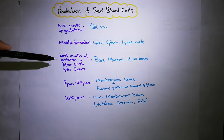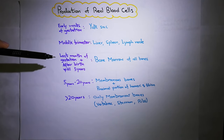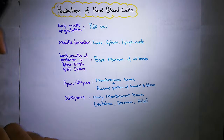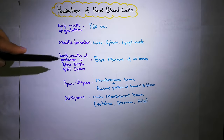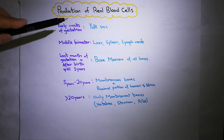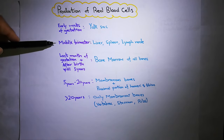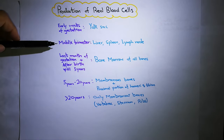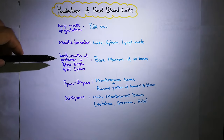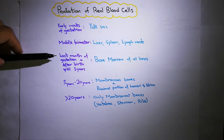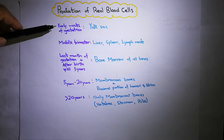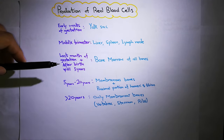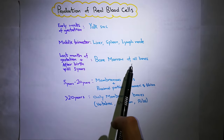You know that bone marrow will make RBCs in the last months of gestation. But before that, in early weeks of gestation, RBCs come from the yolk sac. In the middle trimester, liver, spleen and lymph nodes start to make RBCs. And at the end of pregnancy, the bone marrow of all bones produces RBCs.